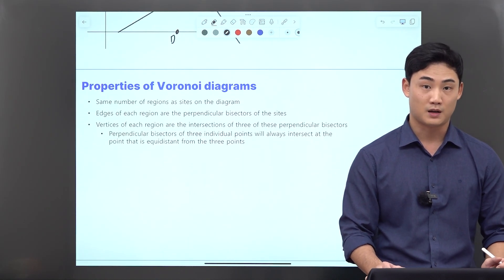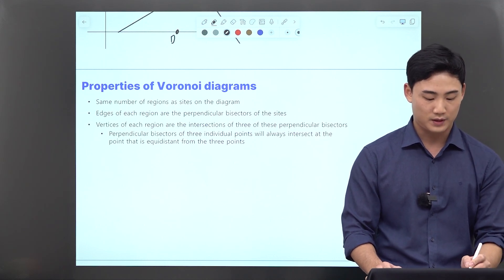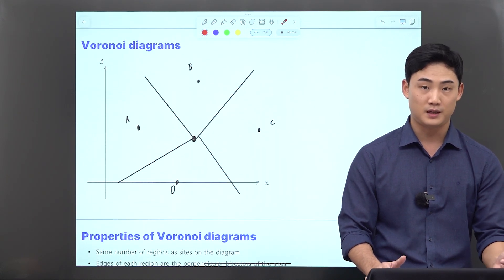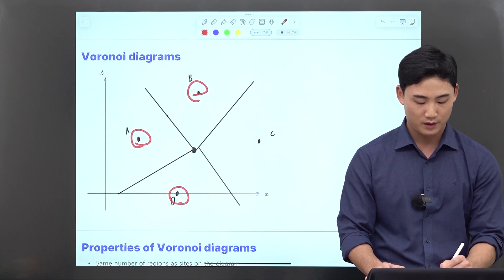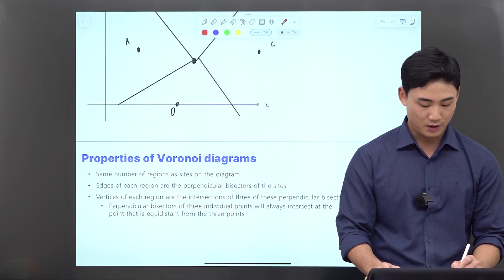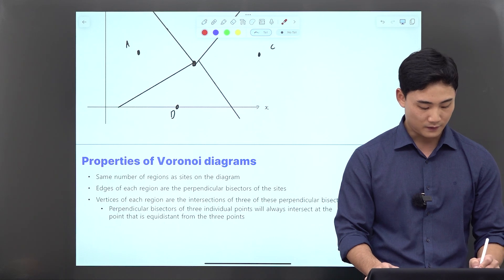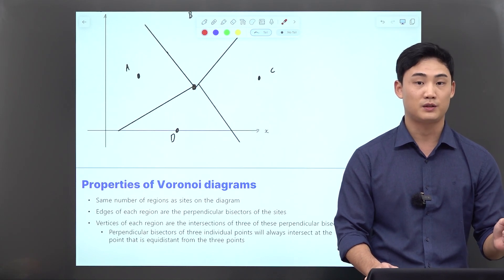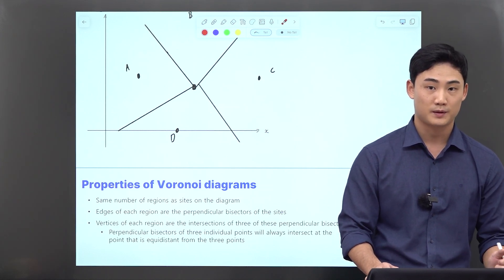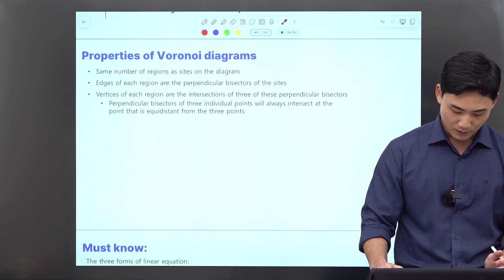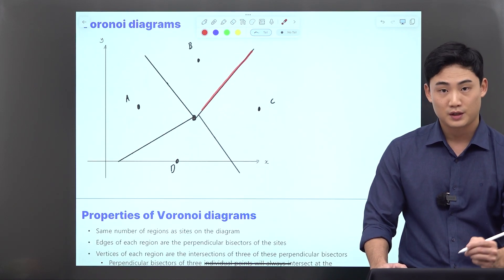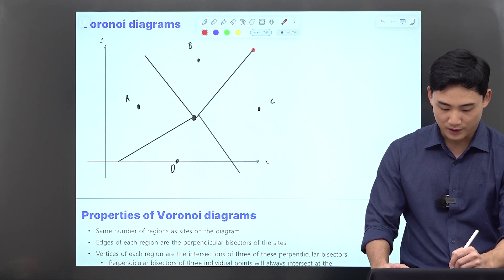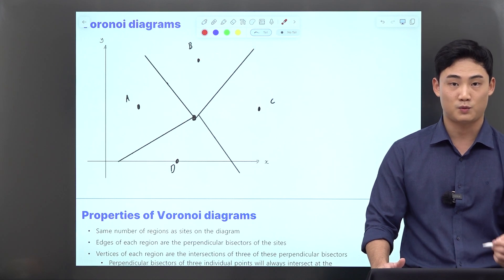Now let's look at the properties of Voronoi diagrams. In order for a Voronoi diagram to be complete, you have to have the same number of regions as there are sites on the diagram. So here we have four sites and four regions. The edges of each region are the perpendicular bisectors of the sites. The vertices of each region are the intersections of three of these perpendicular bisectors — meaning at this vertex, it's equidistant to three of the sites where the three perpendicular bisectors meet. And also, anywhere on this edge, it's equidistant to both of the sites that this bisector divides. So anywhere along this line, if I'm over here, it's going to be the same distance to B as it is to C. This is a very important property that you will use a lot in your exams.